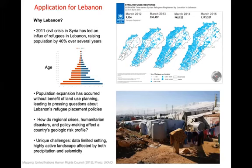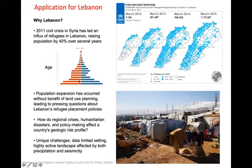I'm going to talk a bit about Lebanon. Perhaps you might wonder why we started this work with an application there. It's no surprise to anyone that there has been a major humanitarian crisis in that part of the world, beginning in 2011 with the civil crisis that erupted in Syria. That's led to a massive influx of refugees into Lebanon, raising the population of the country by 40% over just several years — with a majority of refugees being children aged zero to fifteen. This is one of the most significant humanitarian crises of our generation. That population expansion occurred without the benefit of any kind of formal land use planning, leading to pressing questions about Lebanon's refugee placement policies.